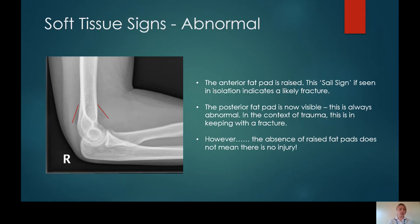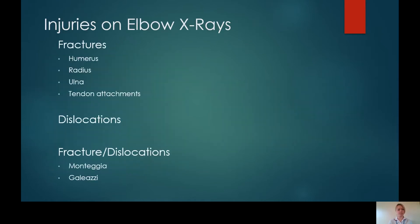Frustratingly, the absence of various fat pads does not mean that there is no injury present, so don't be caught out. Just because you can't see a joint effusion does not mean that there is not a fracture on that X-ray. The injuries that we can see on elbow X-rays can be subcategorised into fractures, dislocations, and more complex fracture dislocation patterns as well.